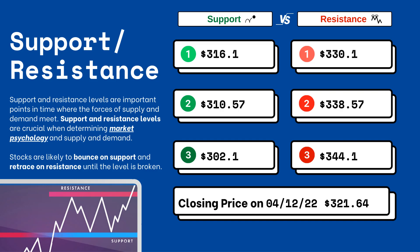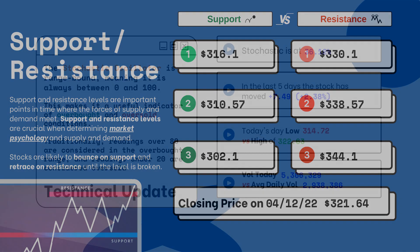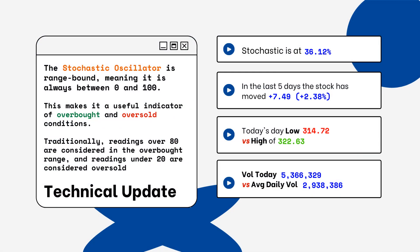These are areas that you want to watch when looking at this particular stock. Stocks typically bounce at support levels and they resist at resistance levels, meaning they'll retrace from that top level. You can see on the right side where the stochastic level is on this particular stock. This is a technical update because you want to look for overbought and oversold conditions.